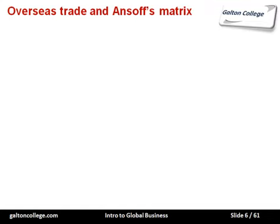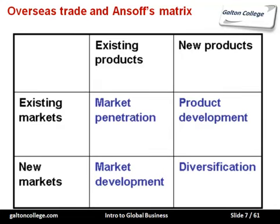Let's start by looking at the Ansoff Matrix, a technique which has cropped up in other videos. The matrix looks at existing products and new products against existing markets and new markets. Existing products going into existing markets is called market penetration. Existing products going into new markets is market development. Existing markets with new products is called product development. And new products into new markets is called diversification — a way of looking at expansions into other markets.